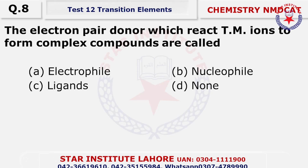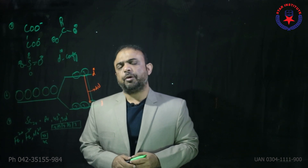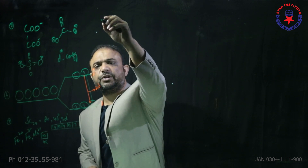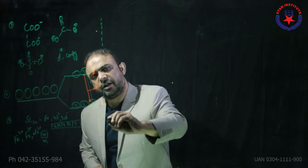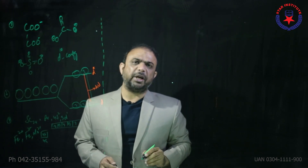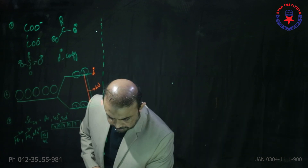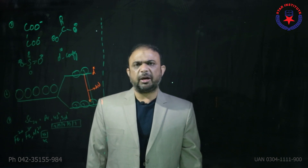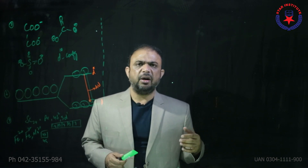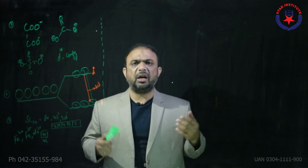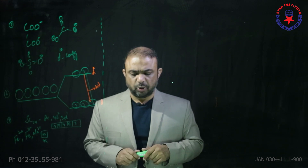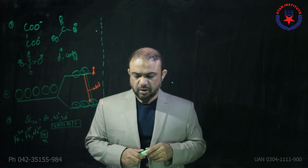Question number eight: the electron pair donor that reacts with a transition metal ion to form a complex compound is called — electron pair donors are ligands. Ligands are defined as which donate or tend to donate a lone pair or pairs. Question number nine: there are more than 60 transition metals — 28 belong to the F block and 38 to the D block, roughly 66 total; generally we say more than 60.